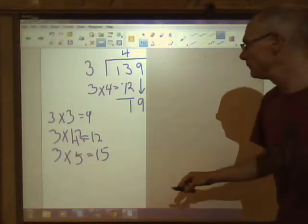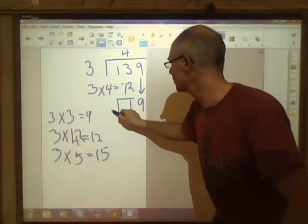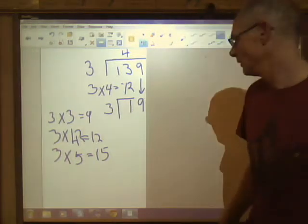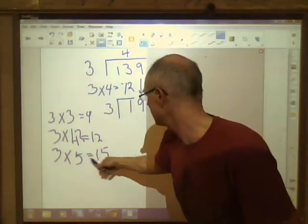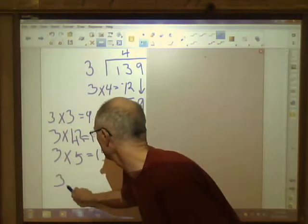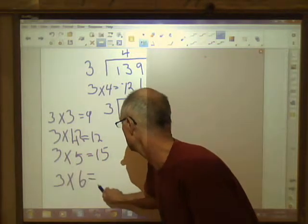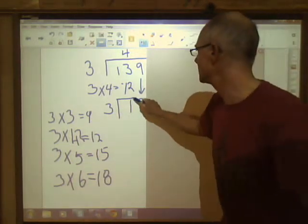How many times does 3 go into 19? Well, when we look at this list here, 3 x 6 = 18. So 3 must go into 19 six times.